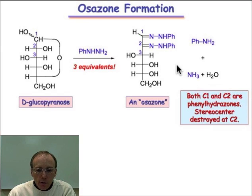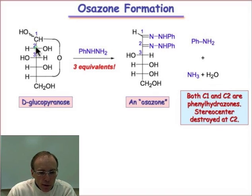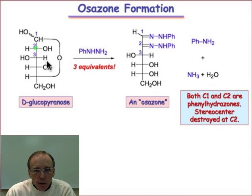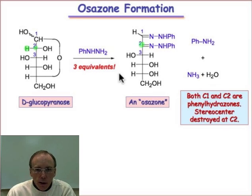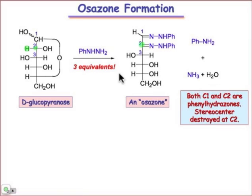You can notice in this reaction, and our mechanism will have to explain it, that there's an oxidation state change at carbon 2. We had one carbon-hydrogen bond at C2 in the starting material, and in the product — the osazone — there are none. So at carbon 2, there has been an oxidation reaction taking place.